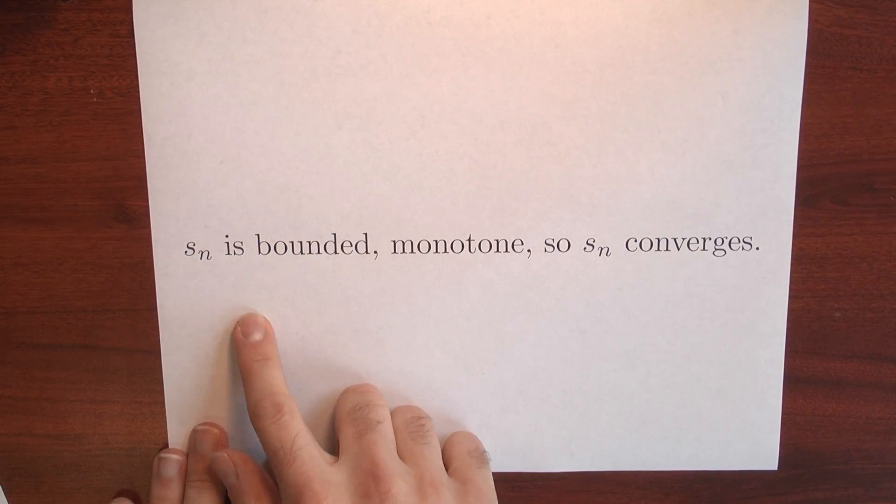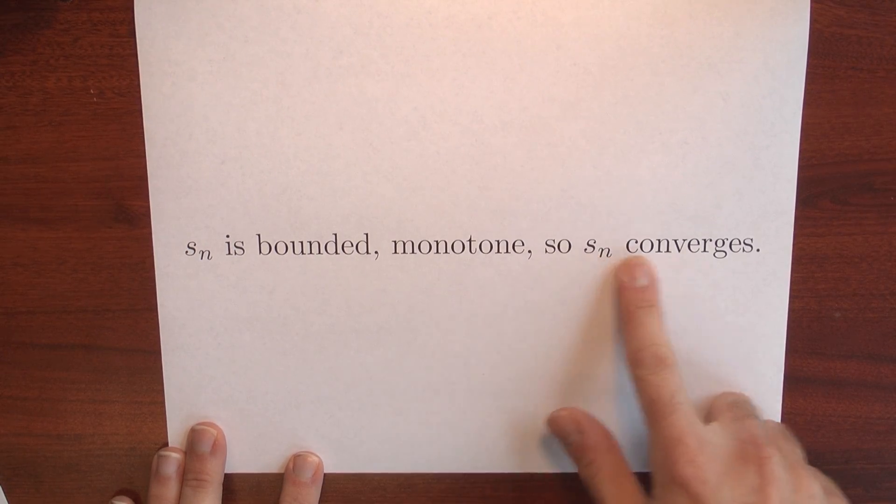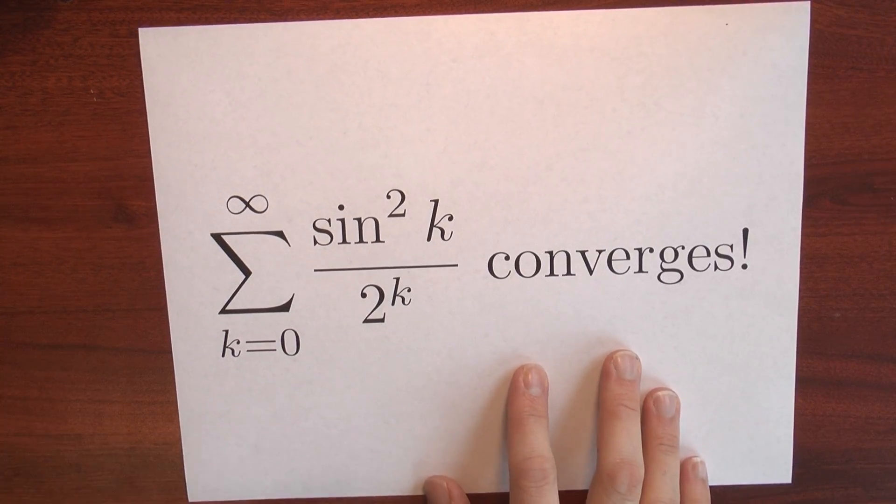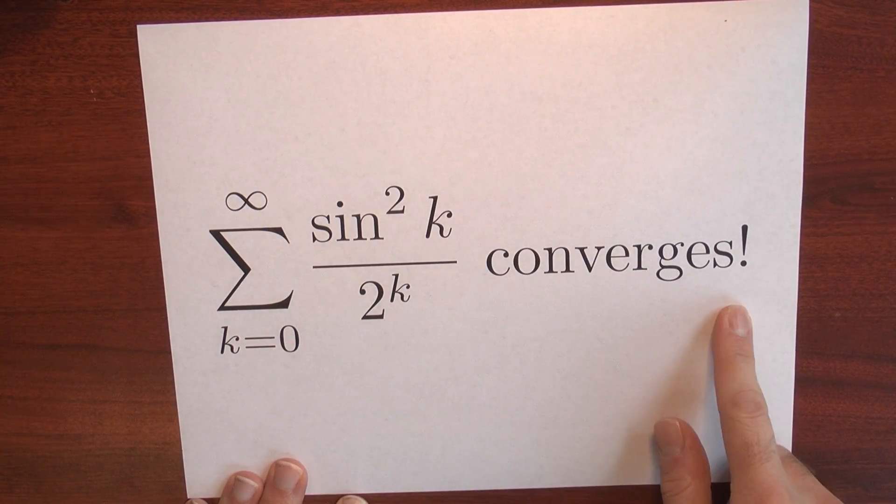So I've got a bounded monotone sequence. But a bounded monotone sequence converges. So we know something about the original series. And because the sequence of partial sums converges, that's exactly what it means to say that the series converges.